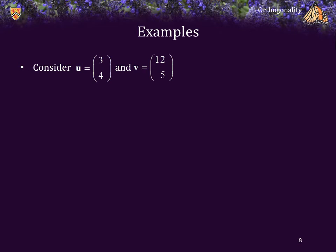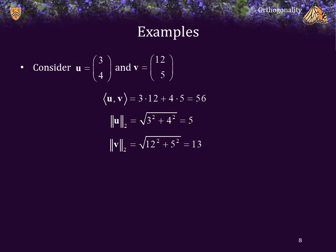Let's consider these two vectors: u is (3, 4) and v is (12, 5). The inner product is 3 times 12 plus 4 times 5, which is 56. The two-norm of u is the square root of 3 squared plus 4 squared, which is the square root of 25, or 5. The two-norm of v is the square root of 12 squared plus 5 squared, which is 144 plus 25, which is 169 — the square root of that is 13. Thus, the inner product is 56 in absolute value, and that is less than or equal to 65, which is the product of the two norms.